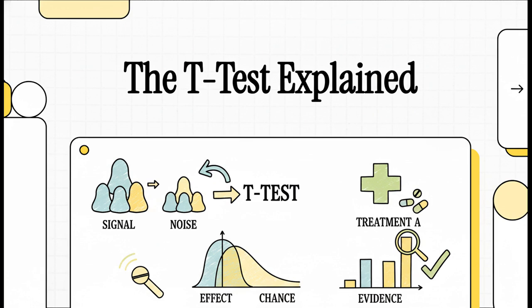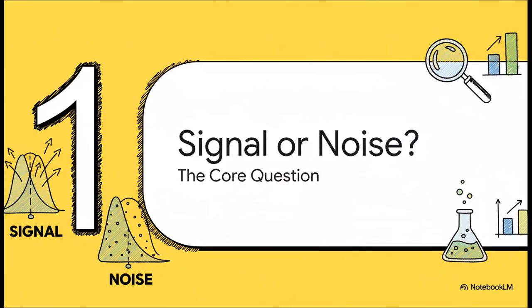Well, today, we're going to pull back the curtain on one of the key tools that scientists use to find out for sure. So, let's stick with that miracle drug idea. Imagine a new pill comes out that's supposed to boost your memory. Some people take it and they're like, wow, I feel so much sharper. But then other people are like, eh, I don't feel any different. So what's going on here?